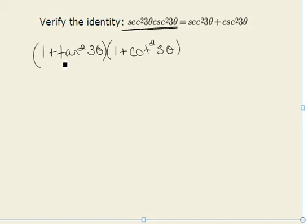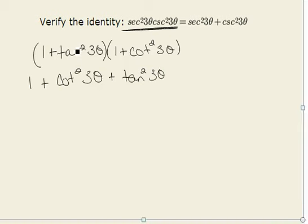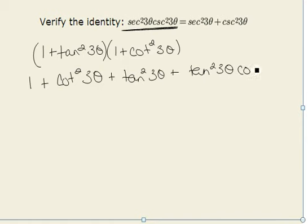We will now recognize this as a product, and we can use the distributive property to simplify. We have 1 times 1, or 1, plus 1 times cotangent squared of 3 theta, plus tangent squared of 3 theta times 1. Finally, we have tangent squared of 3 theta times cotangent squared of 3 theta.